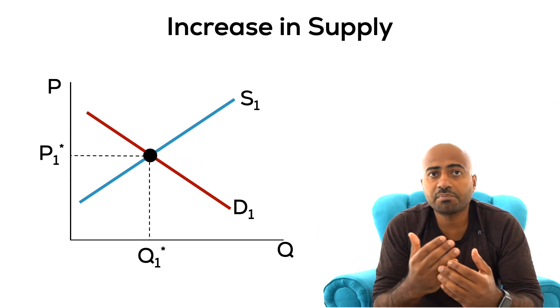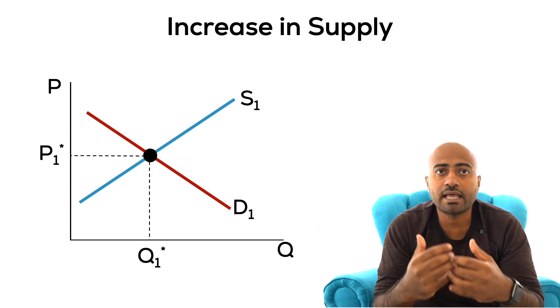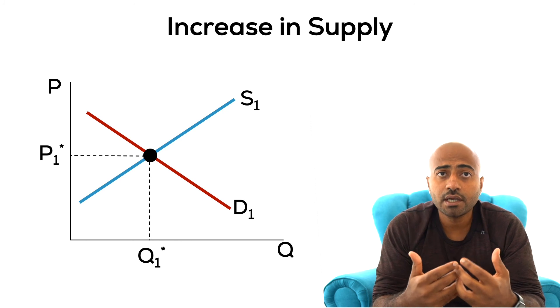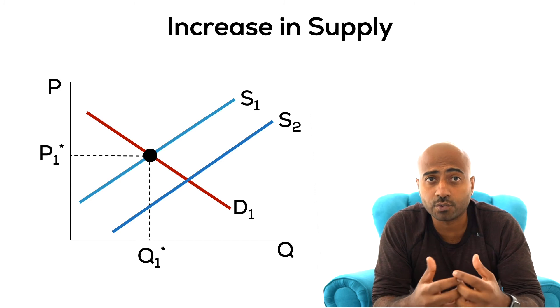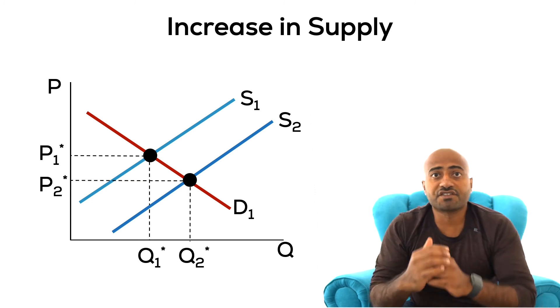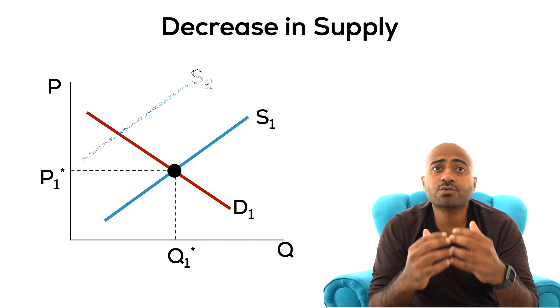If there's a change on the supply side of the market that allows firms to produce more then supply increases and prices will adjust downward. If supply decreases then the market prices will adjust upward.